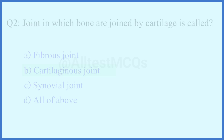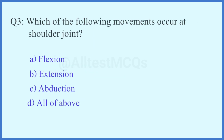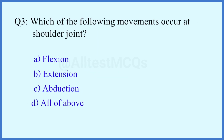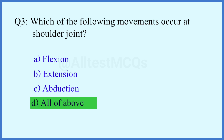Question number 3. Which of the following movements occur at the shoulder joint? The right answer is option D: All of the above.